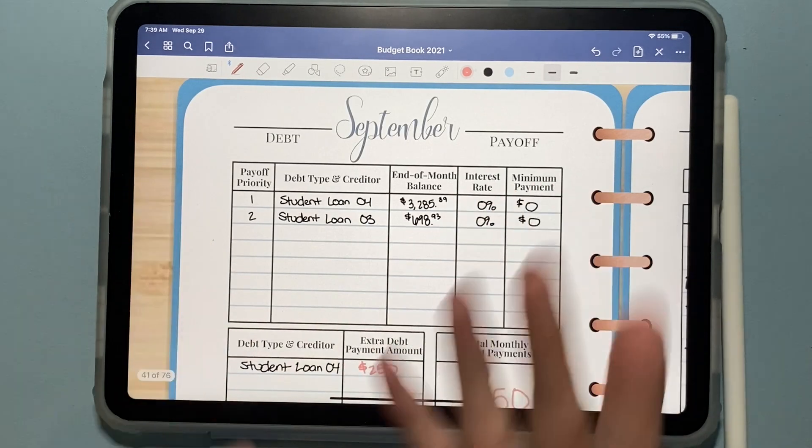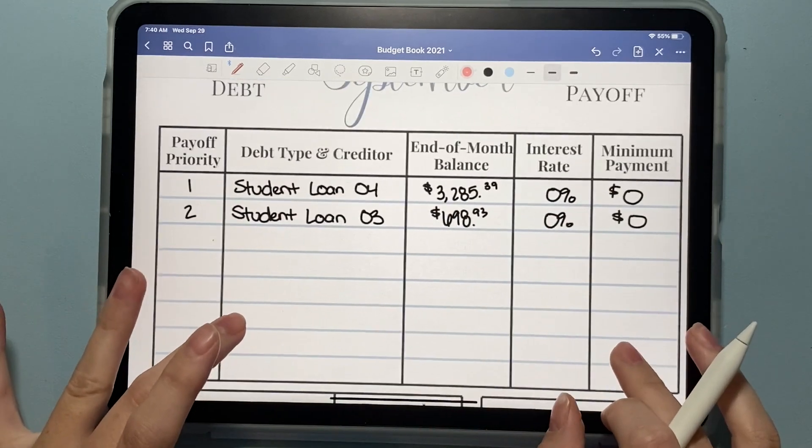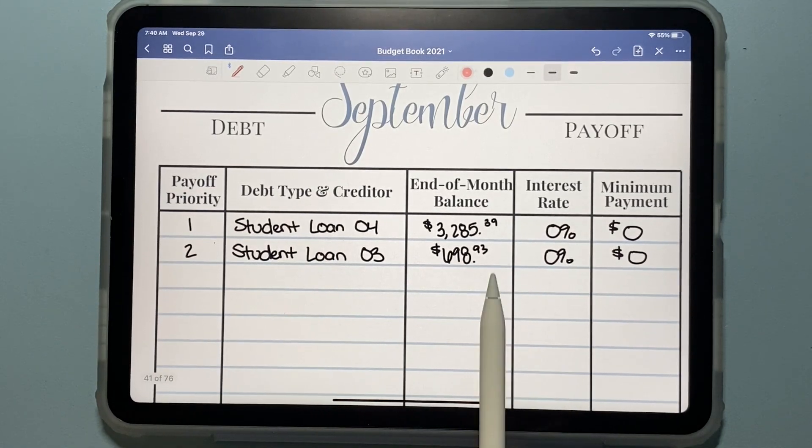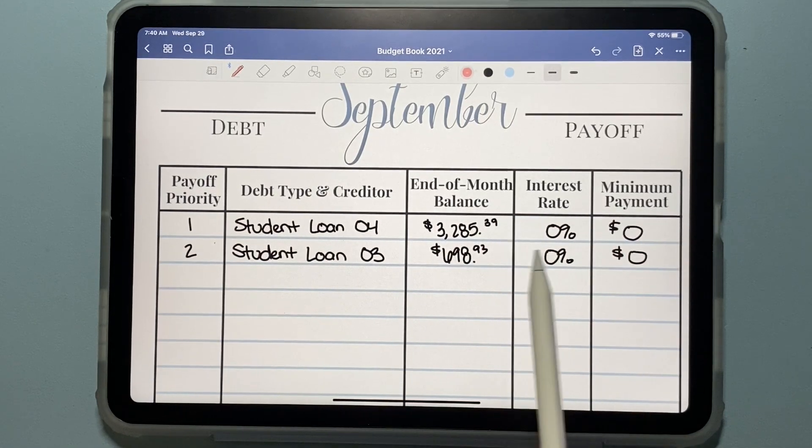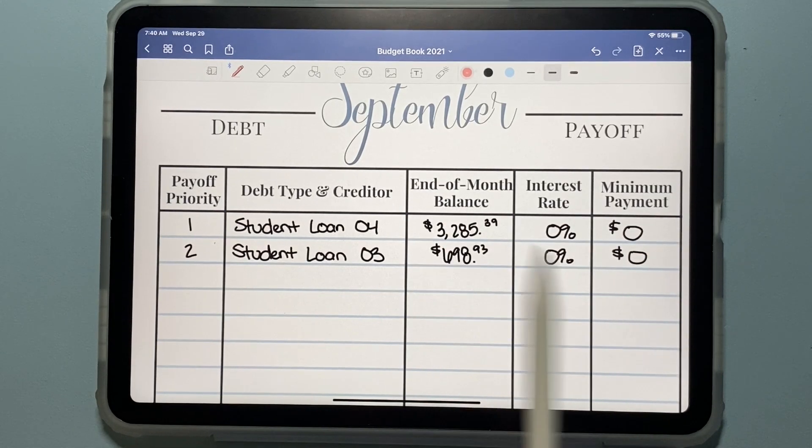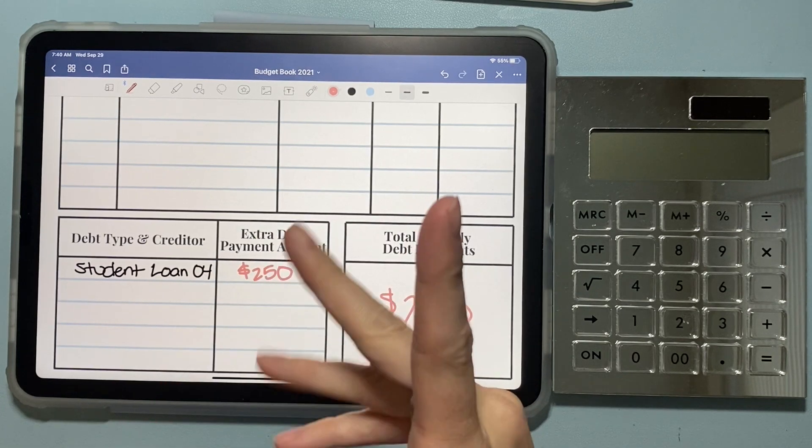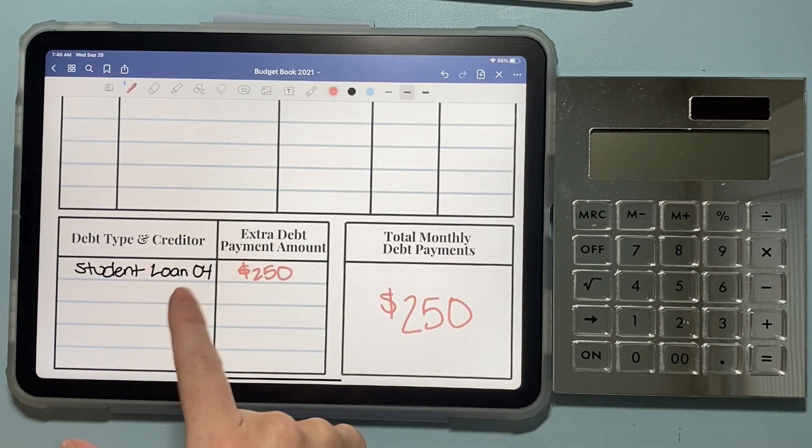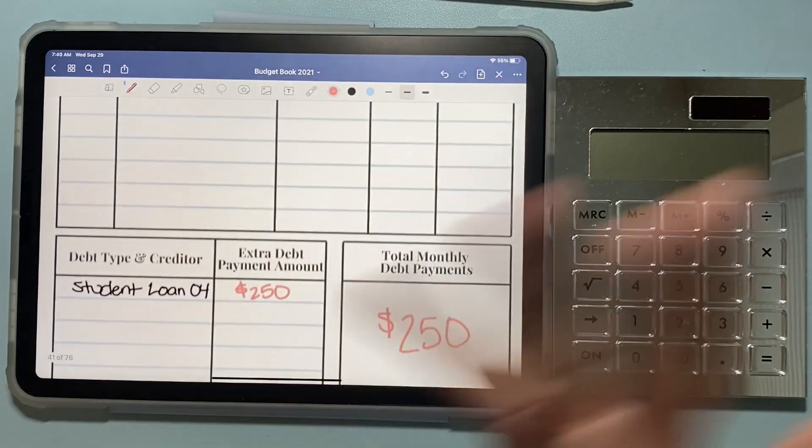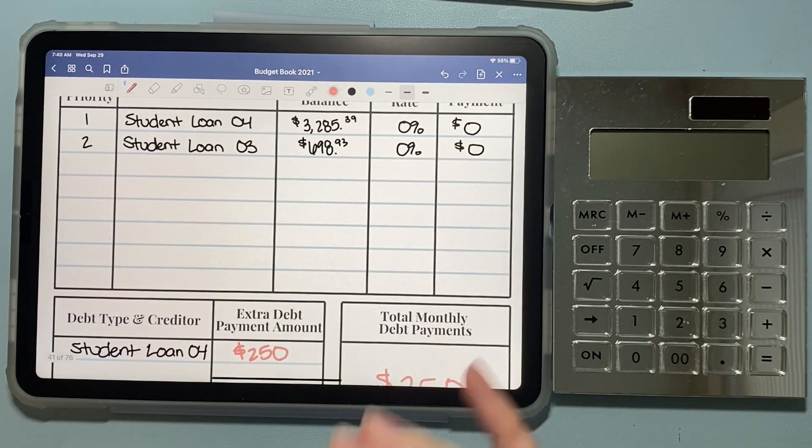So as we do every month, we'll start with my debt payoff. And I did already pre-fill in a few things. So you'll see here, we have two debts left. If you're new to my channel, they are just my student loans. They're both in forbearance, so the interest rates are zero. My minimum payments are zero. And these are my end of month balances. And this month we were able to put $250 in my envelope to pay off my student loan, which is my bigger loan, which when interest kicks back in has more interest. I use the debt avalanche method, so we pay off our highest interest rate debt first.